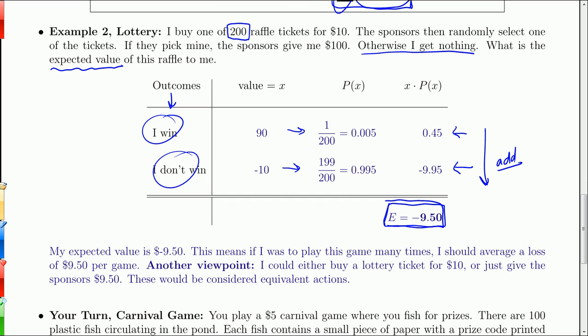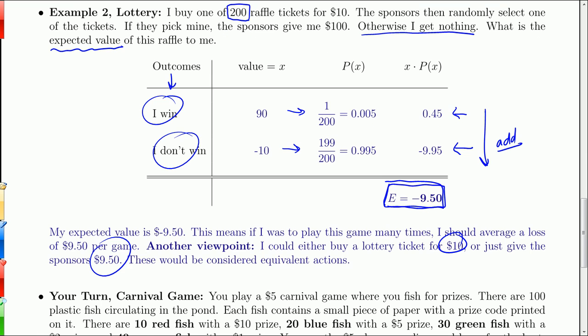The expected value, in terms of the average over the long run, is negative 9.5. Another way of saying that is, I could either buy one of these lottery tickets for $10, or I could just give the sponsors $9.50. To me, those are equivalent actions. Either way, I sort of expect to lose 9.50.